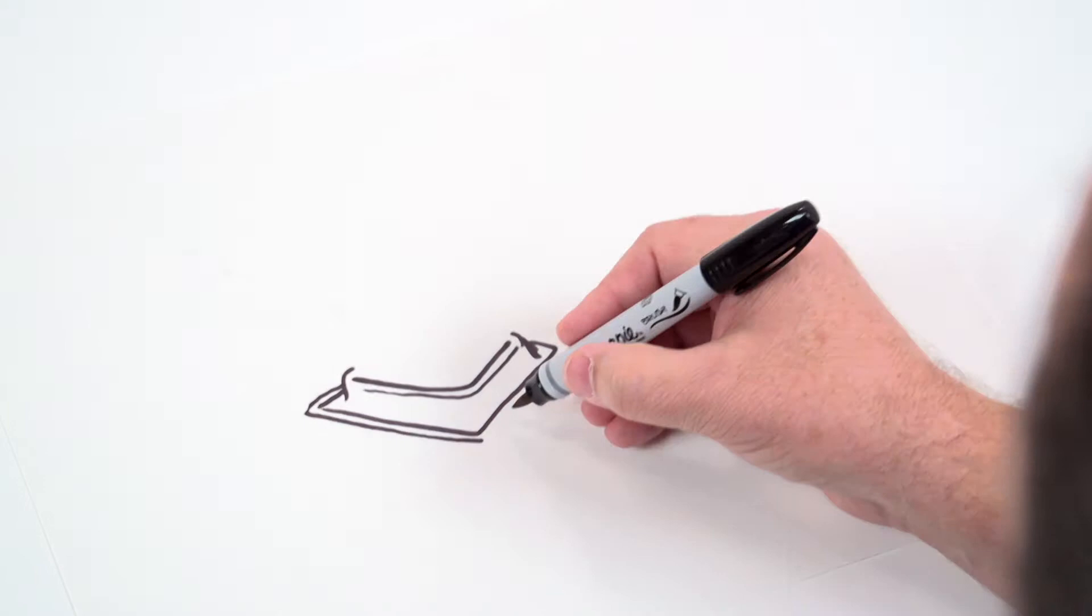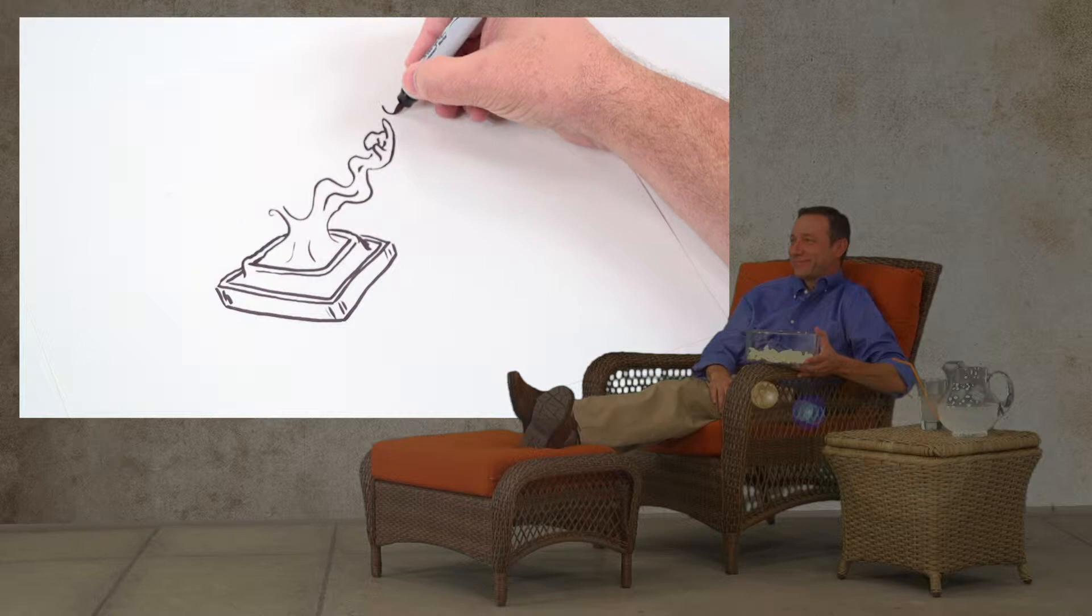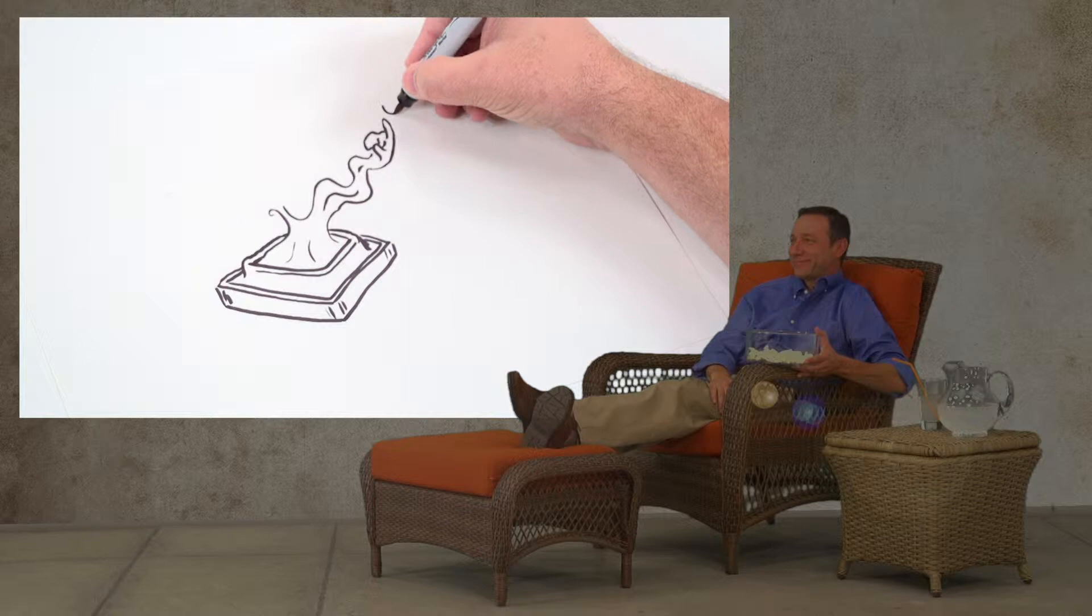When reassembling the room, consider using a mattress and box spring encasement to trap any remaining bed bugs, and an interceptor trap to attract and eliminate any stragglers.